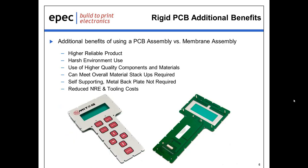There are additional benefits using a rigid PCB over the membrane-style assembly. You get a higher-reliability product that survives harsher environments that military and medical applications require. We also use higher-quality components and materials. We can meet the stack-ups we've seen with membrane-style assemblies and get down to some very thin boards. These are self-supporting and don't require a metal backplate or plastic backing. We can also see reduced NRE and tooling costs, as a lot of the dies required with membrane-style assemblies are not needed with printed circuit card technology.